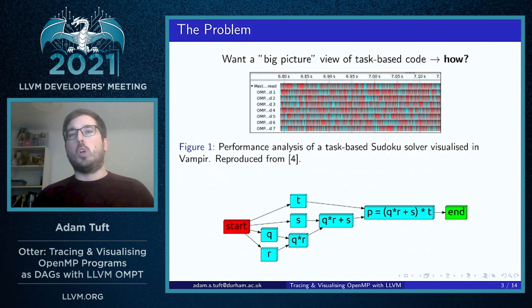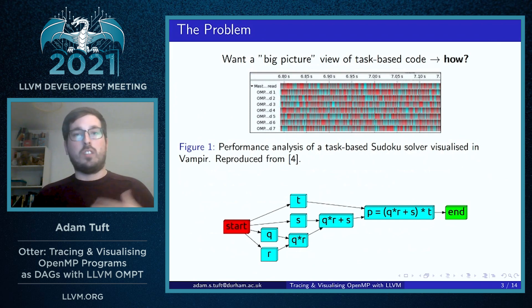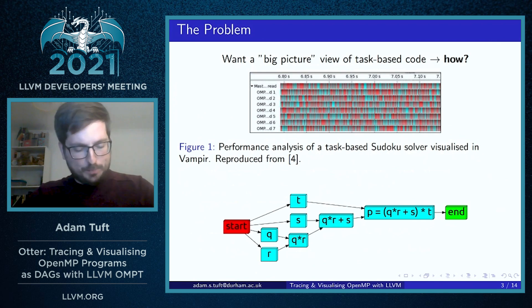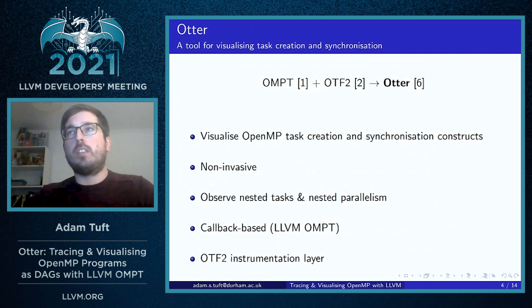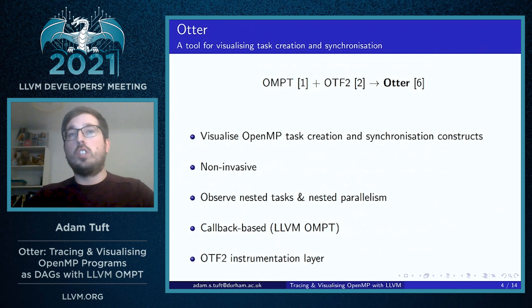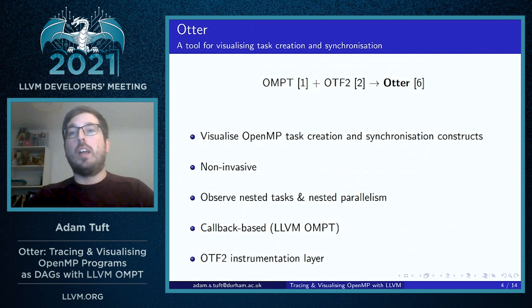These operations then join up at the end to give a final result, in which the actual execution of the tasks is left to the runtime. The tool we've developed based on the LLVM OpenMP implementation is called Otter — an OpenMP tool for visualizing task creation and synchronization constructs in OpenMP programs.